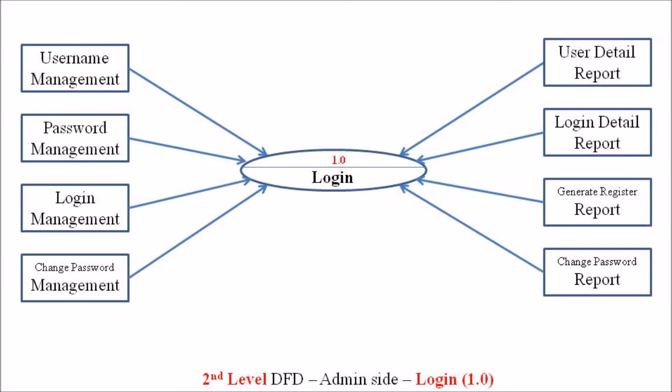The reports associated with this login process are: first, a user detail report, enabling the admin to see the total number of users on the website; second, a login detail report, showing the individual login details of each user; third, a generate register report, which generates registration details and customer credentials; and finally, a change password report showing password changes made by individual users. This completes the level 2 DFD for the login process.